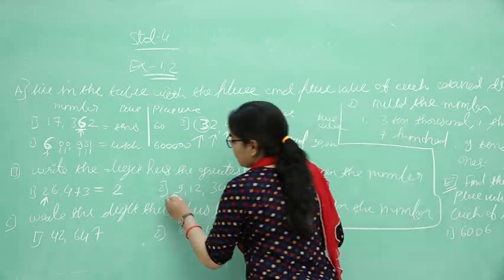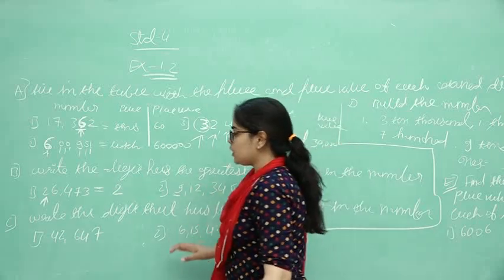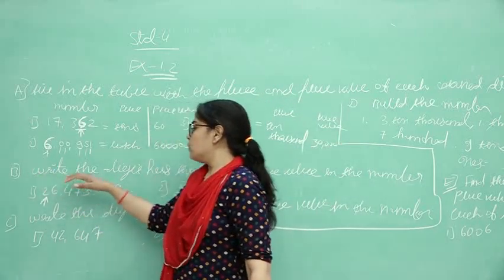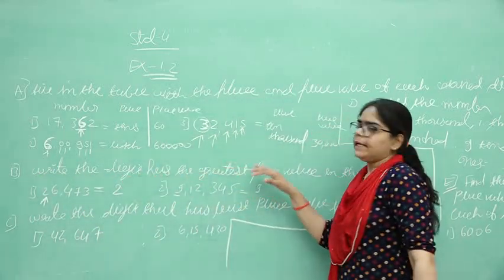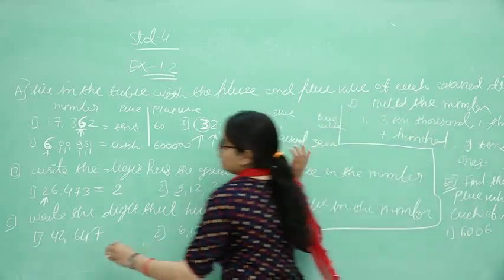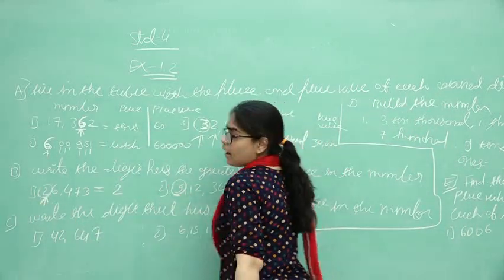1, 10, 100, 1000, 10,000, lakh. Please remember, if in your question it says write the digit that has the greatest place value, then always return first number.